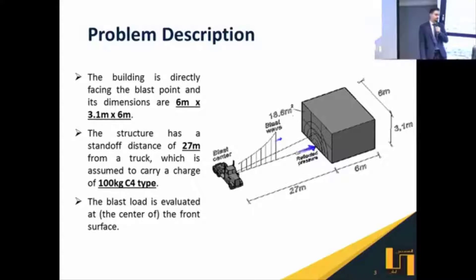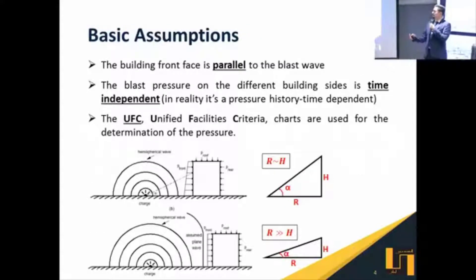Before we start, we have some basic assumptions to make. First of all, the building front face is parallel to the blast wave. If we check the figure below, when the standoff distance, which is the distance between the explosive and the building, is close to the building height, then the generated pressures will be distributed in a trapezoidal distribution on the front face. However, when this standoff distance is much greater than the building height, then we will have a plane wave propagation and the generated pressures will be equally distributed on the front face, which is our case.